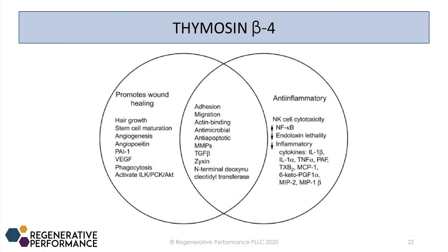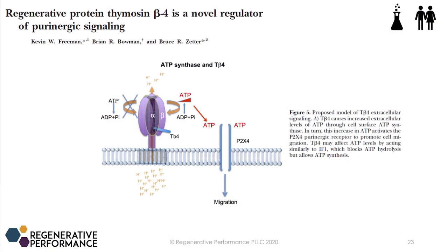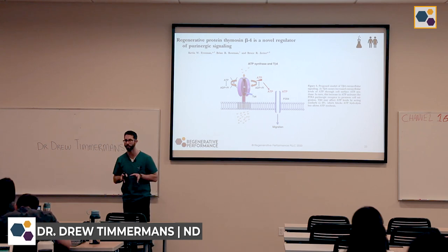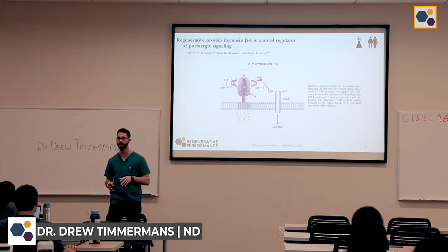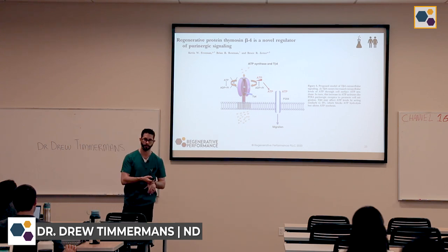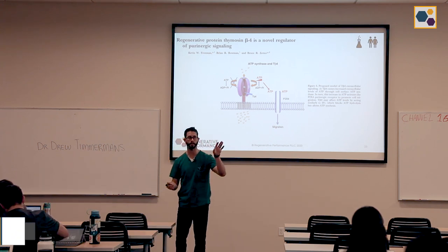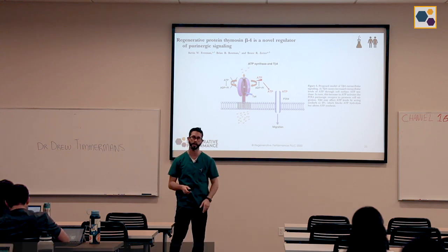Here again are the two branches of TB4: anti-inflammatory and promotion of wound healing. This next slide covers how TB4 works. Basically, the TB4 protein generates ATP using a hydrogen gradient, which results in opening of the P2X pore, sending out signals that result in cell migration. That's one way we see migration of stem cells toward an area because of TB4. Since it's one of the first proteins upregulated on injury, it makes sense that it's sending signals to the rest of the body: send your stem cells here so we can heal this.